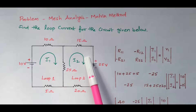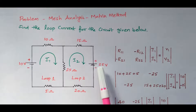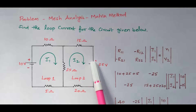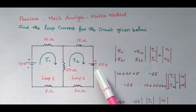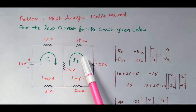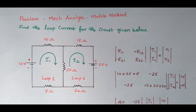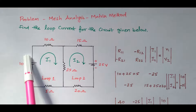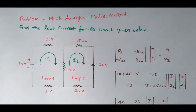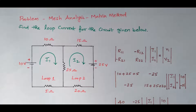For the 25V source, the current is flowing from positive to negative — that is a drop of potential — so we take minus 25. This is very important: based on the current direction, we can identify whether it is a rise of potential or a fall of potential. Upward current means negative to positive, giving plus; downward means positive to negative, giving minus.